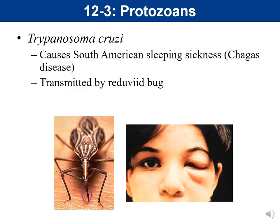Acute Chagas disease lasts about four to eight weeks and occurs immediately after infection. At this stage the parasite may be found in the blood, and the infection could be mild or asymptomatic. There may be fever or swelling at the site of inoculation. Rarely, acute infection can result in severe inflammation of the heart muscle or the brain. Following the acute phase, most infected people enter a prolonged asymptomatic form of the disease where few or no parasites are detected in the blood, and most people are unaware of their infection.